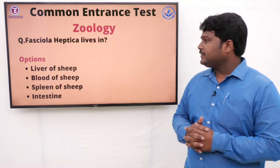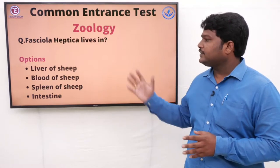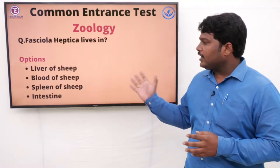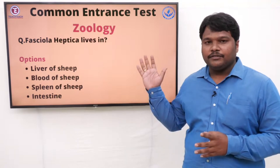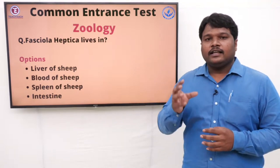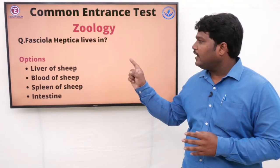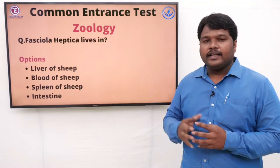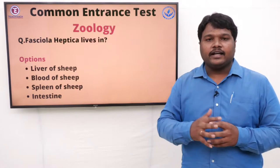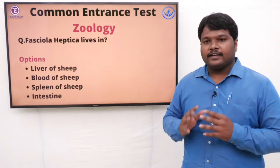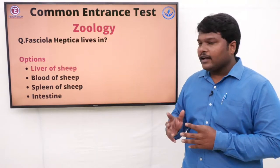Question 24: Fasciola hepatica lives in. Options: A) Liver of sheep, B) Blood of sheep, C) Spleen of sheep, D) Intestine. Sometimes the answer is present in the question itself — 'hepatica' means liver, so the answer is liver of sheep. The right answer is liver of sheep.